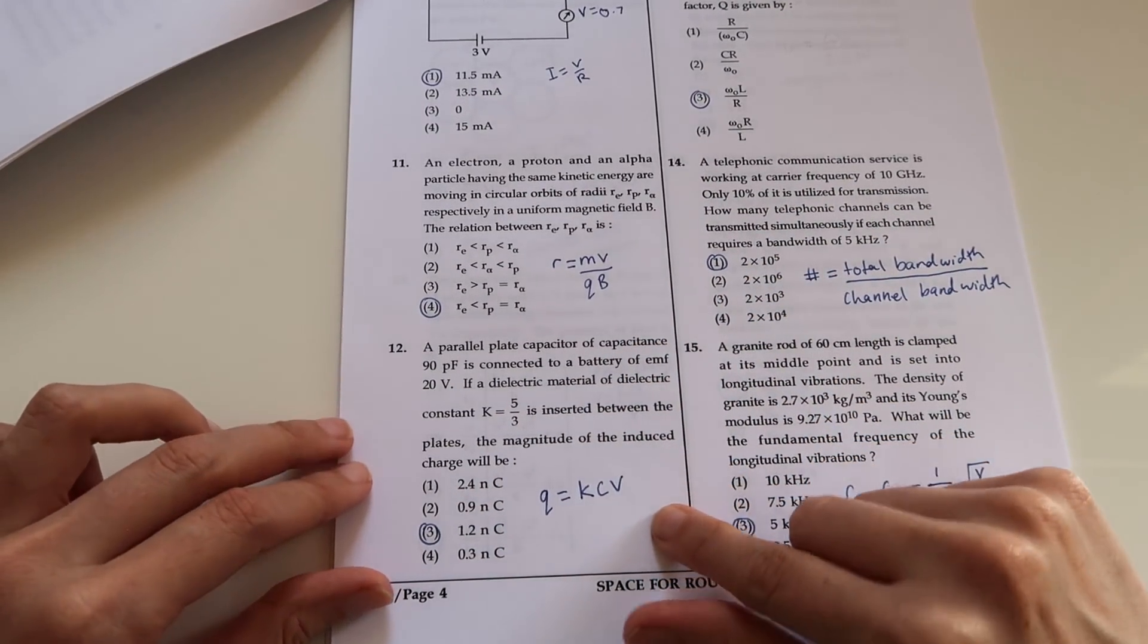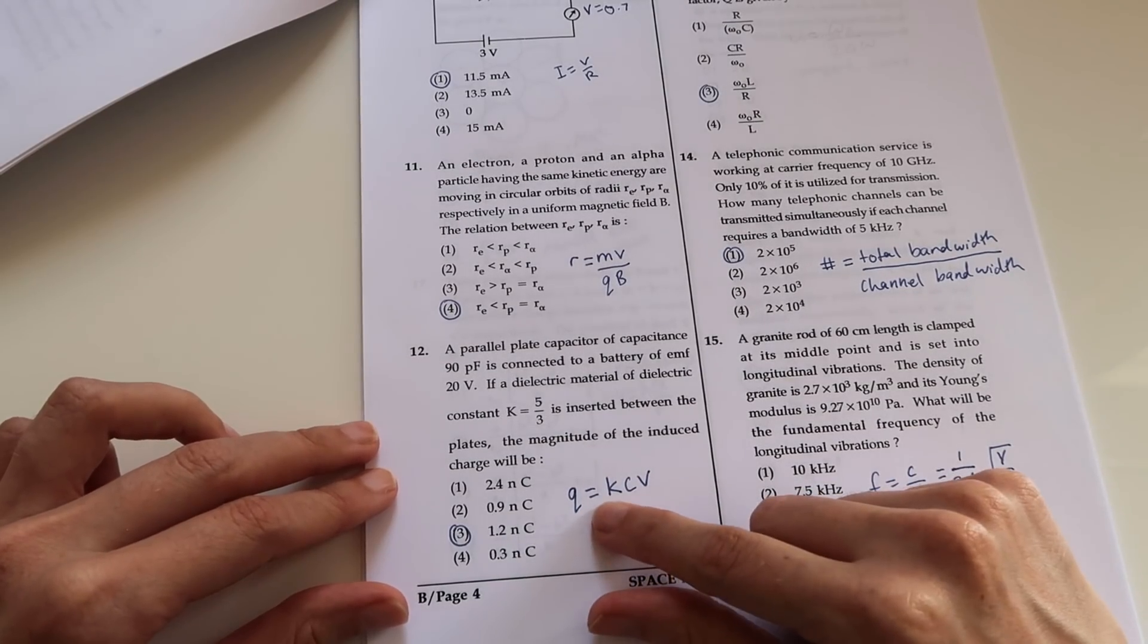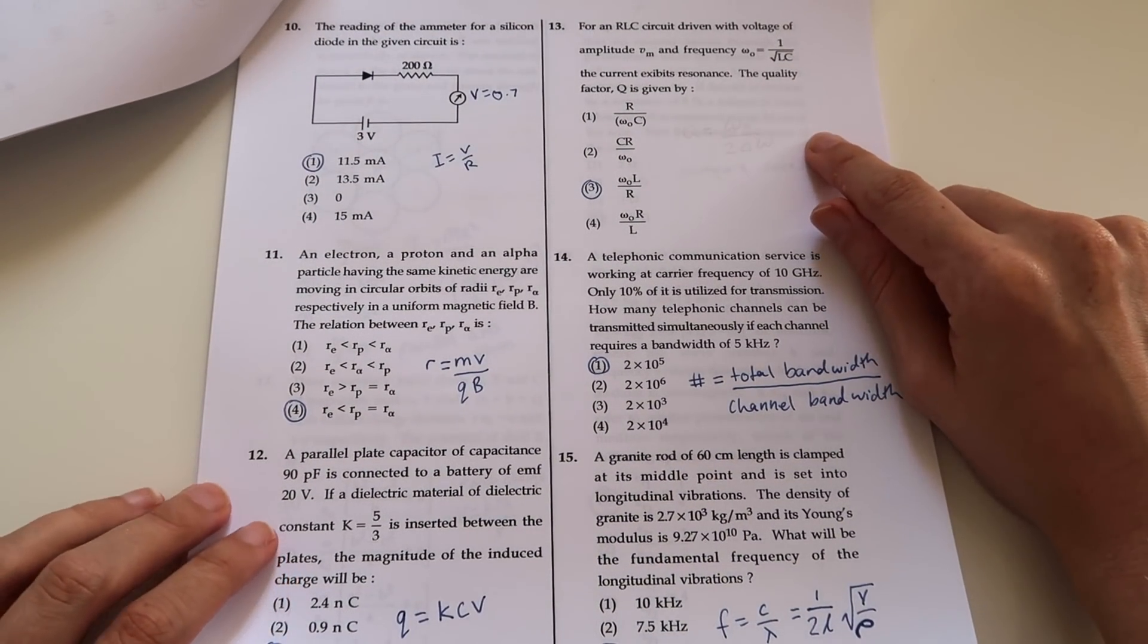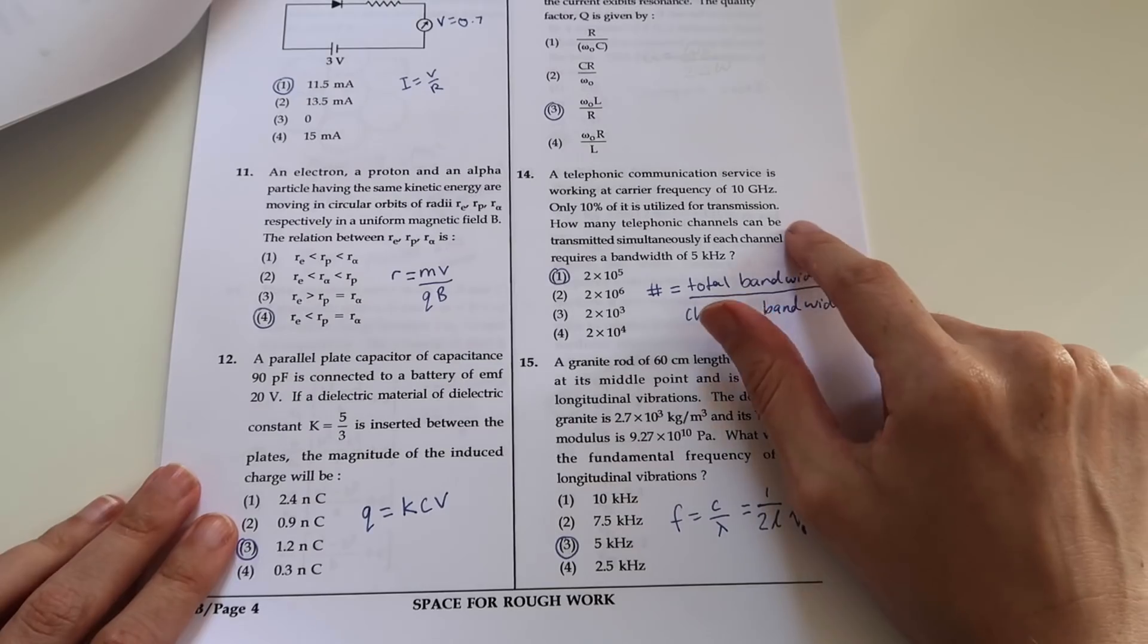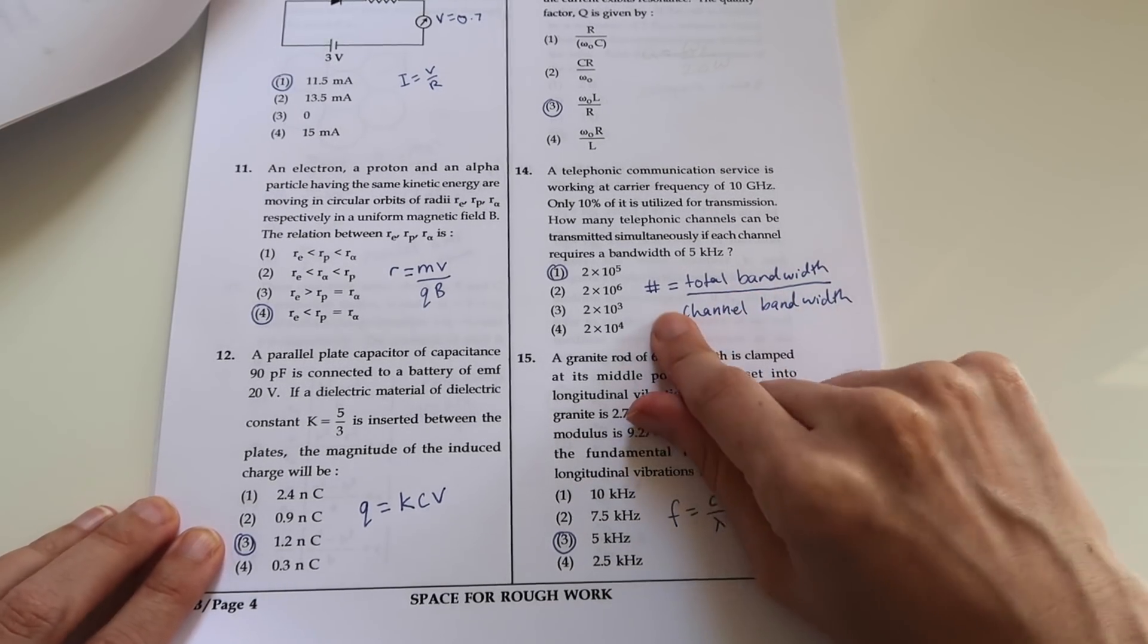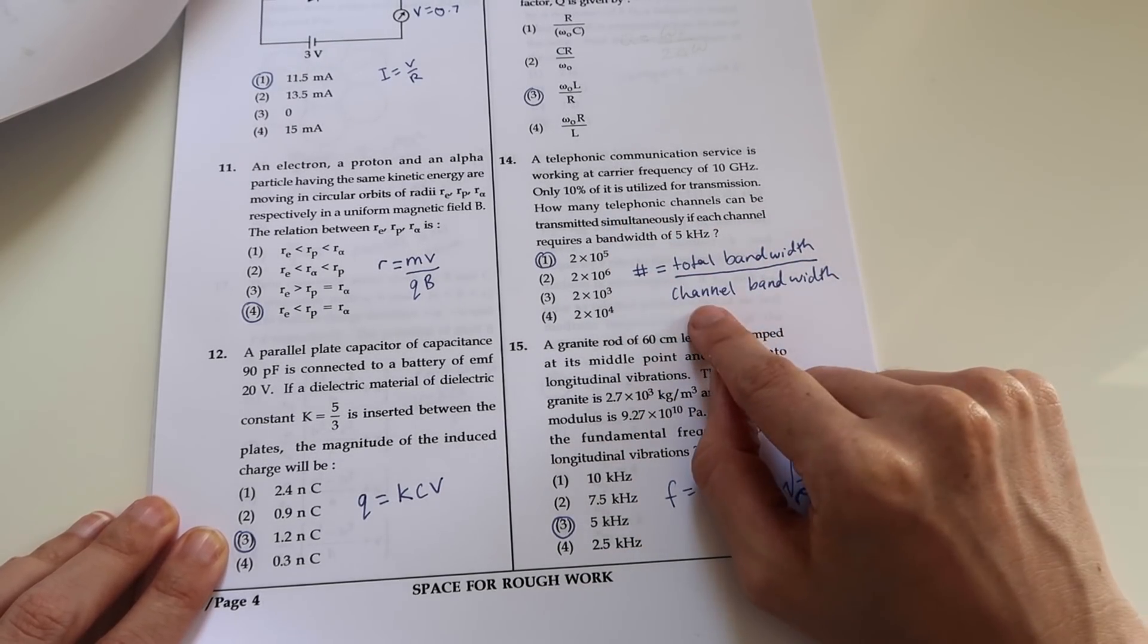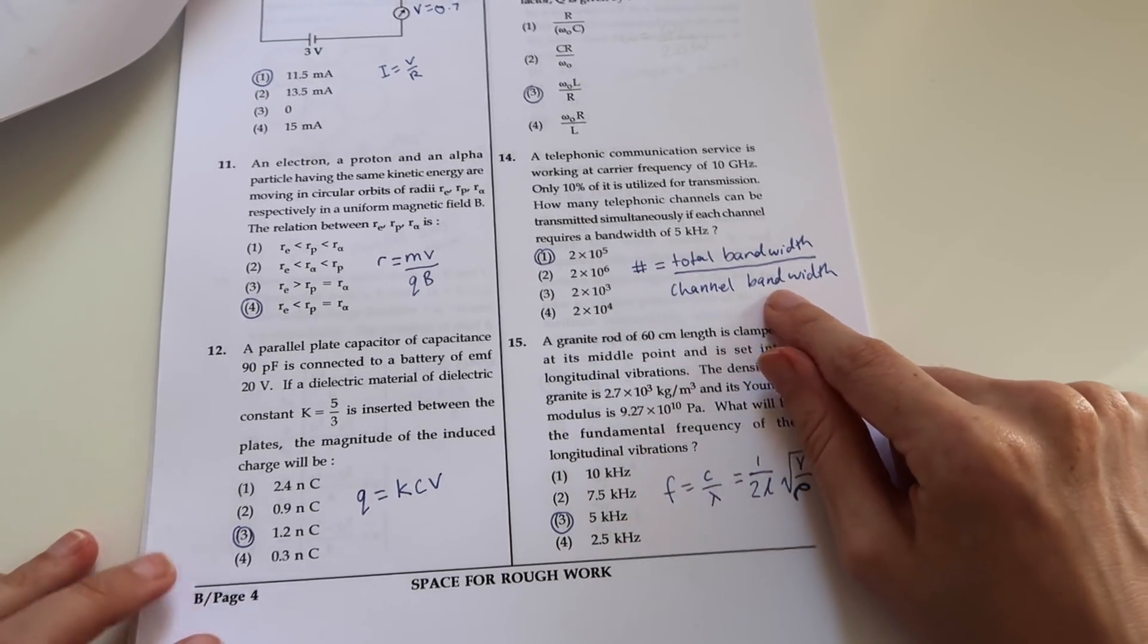Number 12 is about capacitors and dielectrics, so having some relation between dielectrics and the total charge which is stored. Number 13, this time we have an AC circuit and you need to know something about what's called a quality factor. For question 14, it's about communication systems and bandwidth, so they're asking us about the number of telephonic channels, and that would be given by the total bandwidth over the channel bandwidth of each channel.